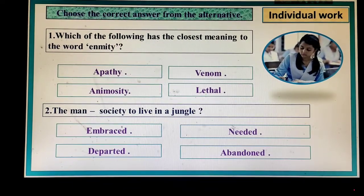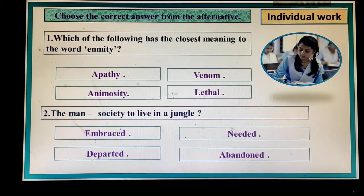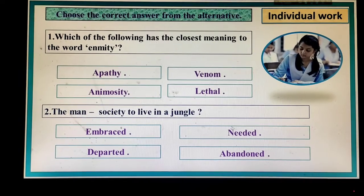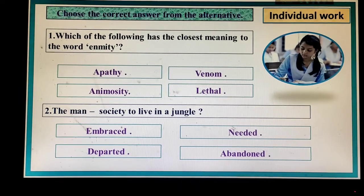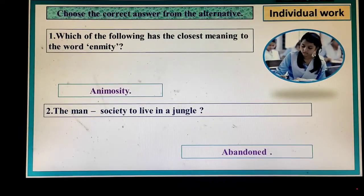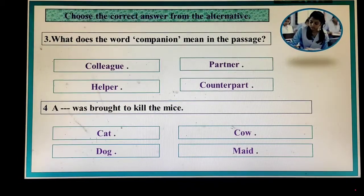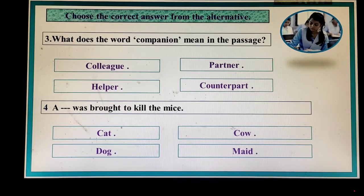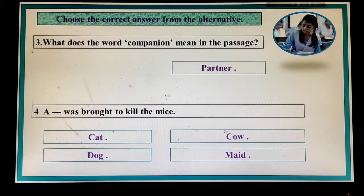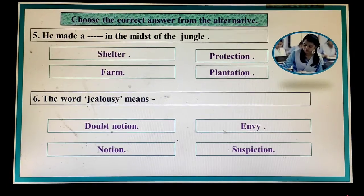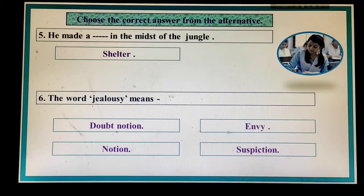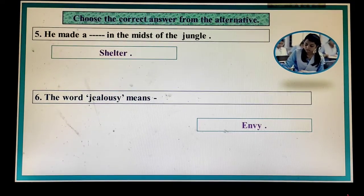My dear learners, choose the best answer from the alternatives. There are four options given — one is the correct answer and the other three are distractors. Which of the following has the closest meaning to the word 'enmity'? What does the word 'companion' mean in the passage? Companion means partner. A dash was brought to kill the mice — a cat was brought. He made a dash in the jungle — he made a shelter. The word 'jealousy' means envy.